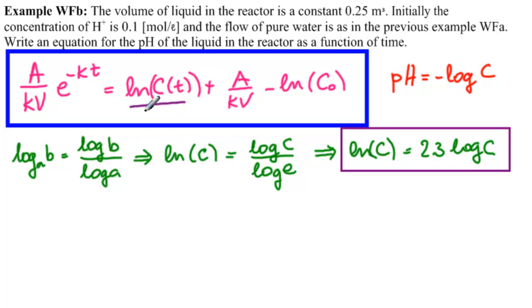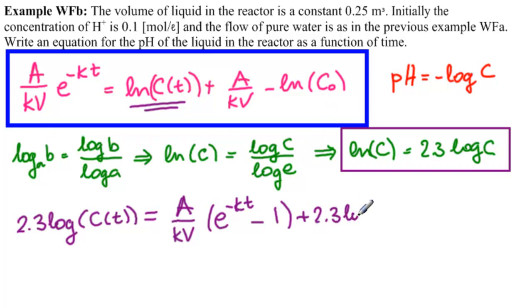So now we want to solve for this. So that would be 2.3 log of C of T, that's this here, equals this minus this. So A, K, V times E to the minus KT minus 1. That's these two. And then that has to go on the other side. So plus 2.3 log of C0.